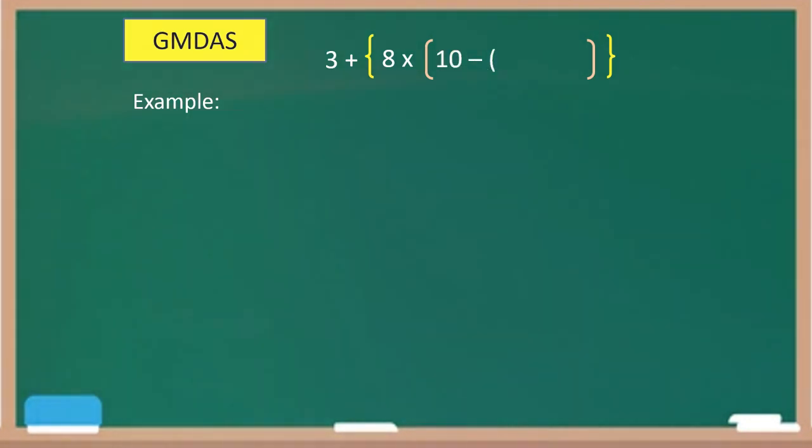The next order of operation is the GMDAS. Example: 3 plus braces, 8 times brackets, 10 minus parentheses 15 divided by 5. As you can see, we have pair of grouping symbols here: the parentheses, the brackets, and then the braces. Which one are you going to solve first? Correct, you are going to solve first the operation within the innermost pair, which is the operation inside the parentheses.